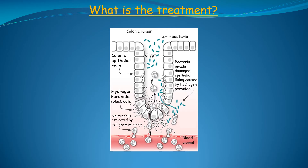If you treat ulcerative colitis with any agent that blocks any aspect of the immune response, this does nothing to eliminate the hydrogen peroxide emanating from colonic epithelial cells, which is the reason why neutrophils are streaming into the colonic epithelium to begin with. Since the hydrogen peroxide is still present, the neutrophils that cause inflammation will return as soon as the medication is withdrawn, causing relapse. While taking any agent that blocks the immune response, the high amounts of colonic epithelial intracellular hydrogen peroxide continues to damage mitochondrial DNA, which leads to higher levels of hydrogen peroxide production in a vicious cycle.